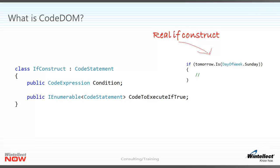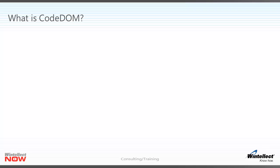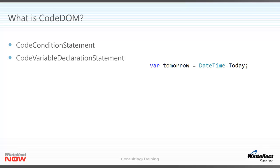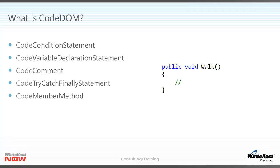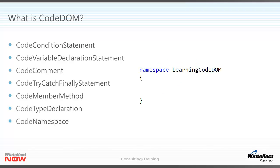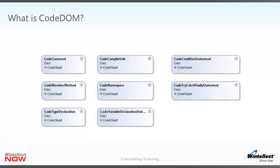What if you wrote an if construct class such that instantiating an object of this class would really produce an if construct in memory? Now imagine yourself writing a class to represent each and every programming artifact in your language of choice. We've already written a class to represent the if construct — I'm calling it the ConditionStatement class. For all the classes, for the sake of convention, we're going to prefix the word 'Code': variable declarations, comments, try-catch-finally blocks, a method within a class, a class declaration itself, a namespace, or one class to represent a logical compilable entity comprising all the classes and namespaces in your system. In doing this, you will have created what appears to be a Code Document Object Model.